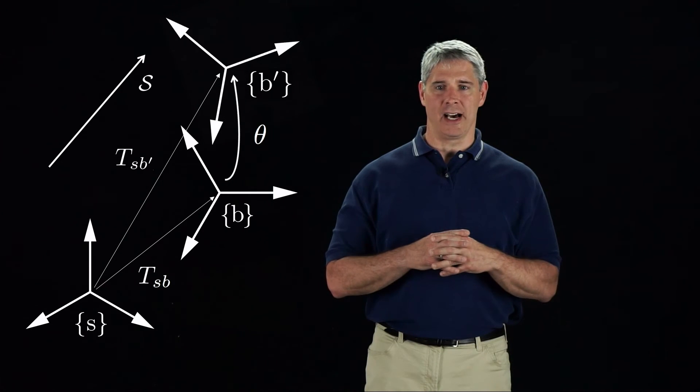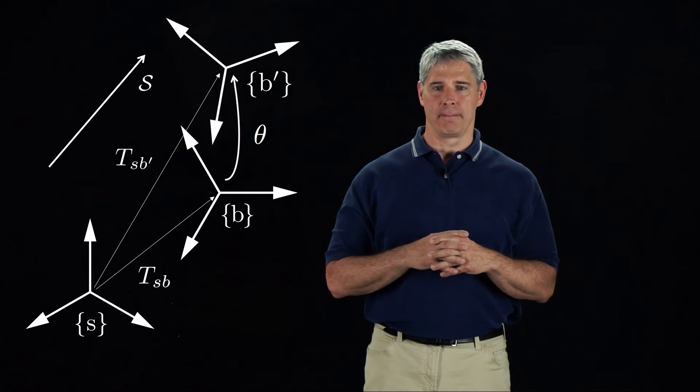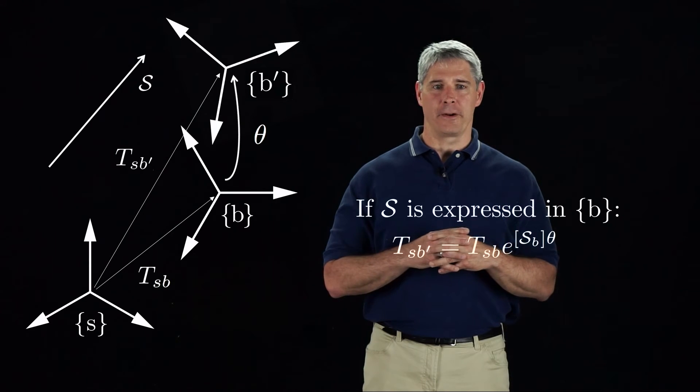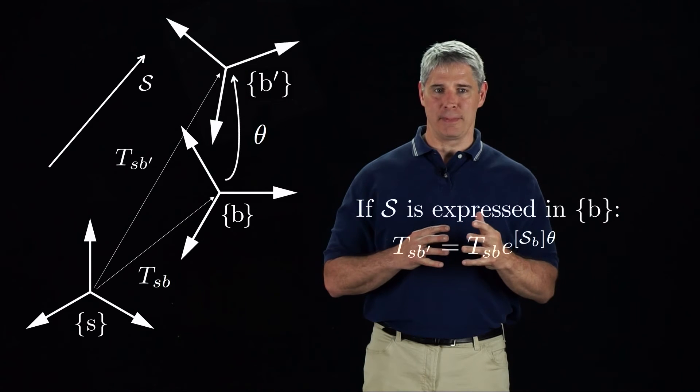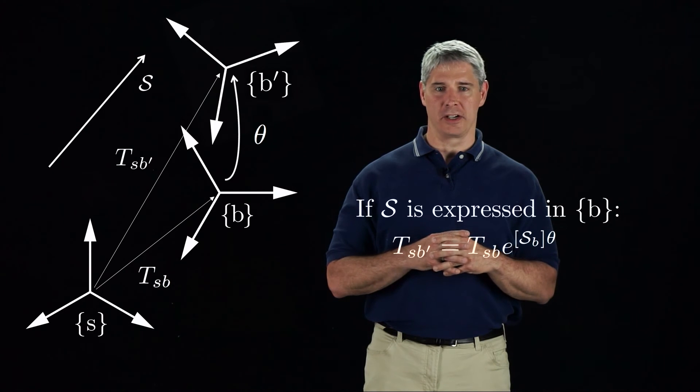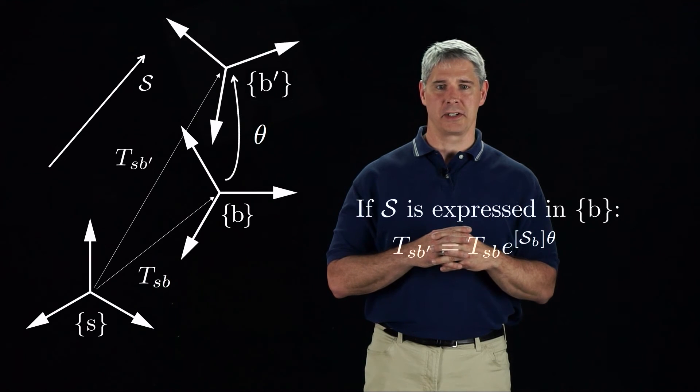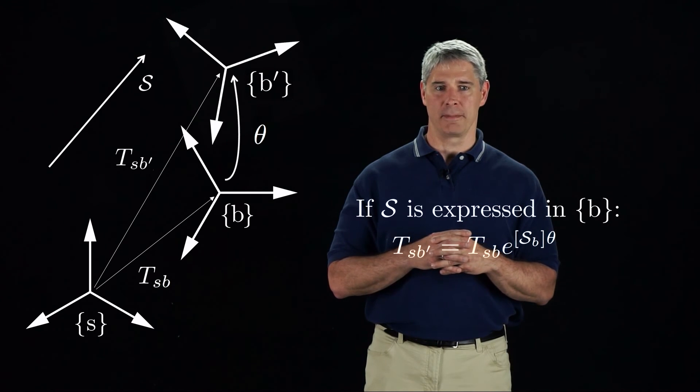We could represent S in either the S-frame or the B-frame. If we define it in the B-frame, the final configuration tSB prime is tSB times the matrix exponential. Remembering that multiplying by a transformation on the right corresponds to a transformation expressed in the frame of the second subscript.